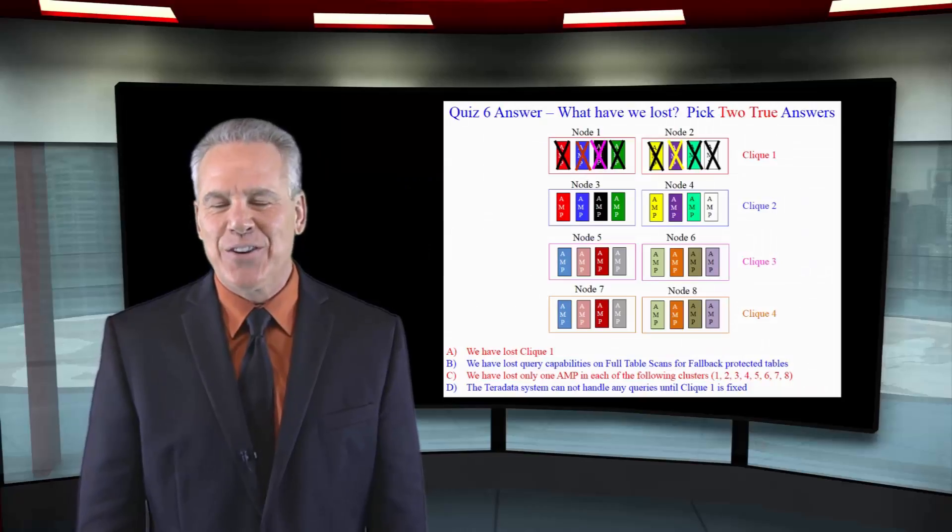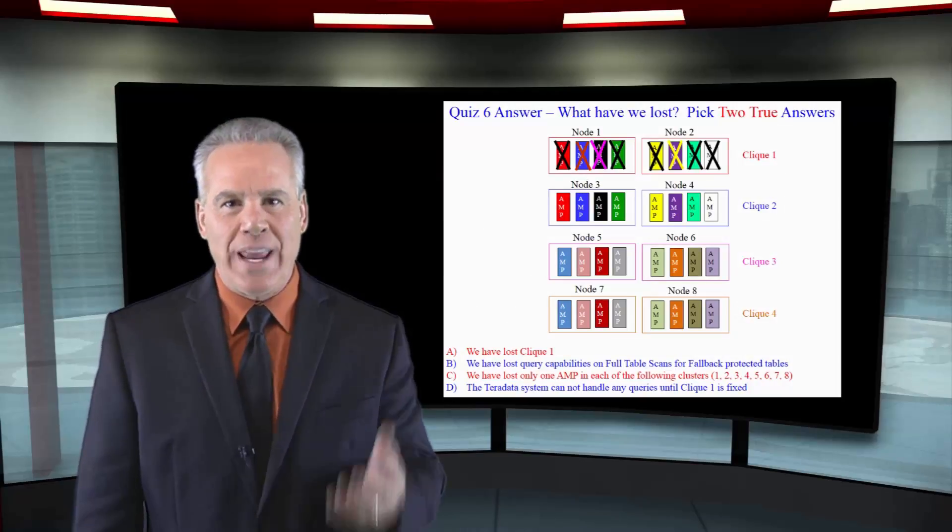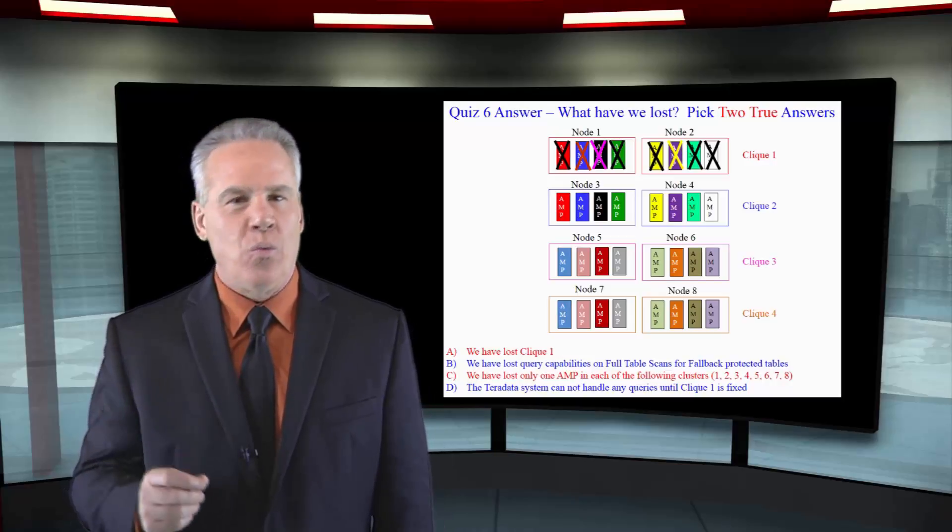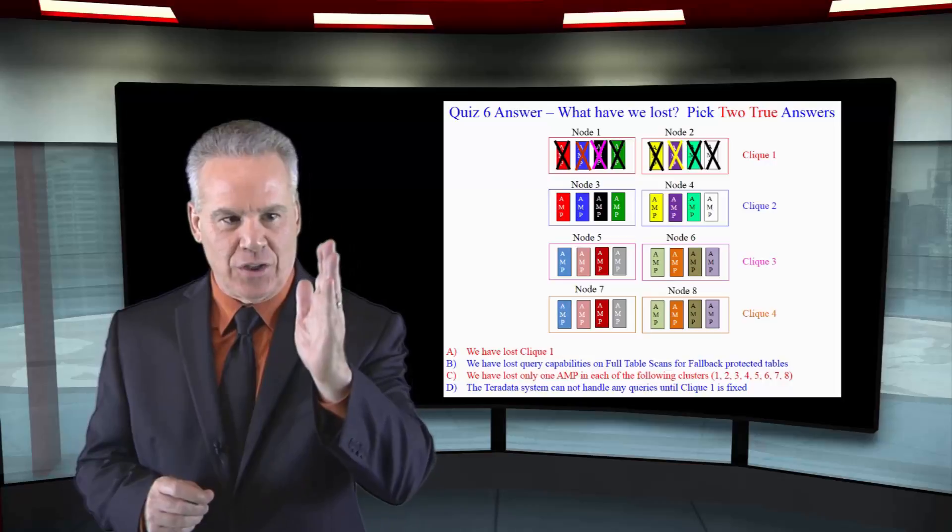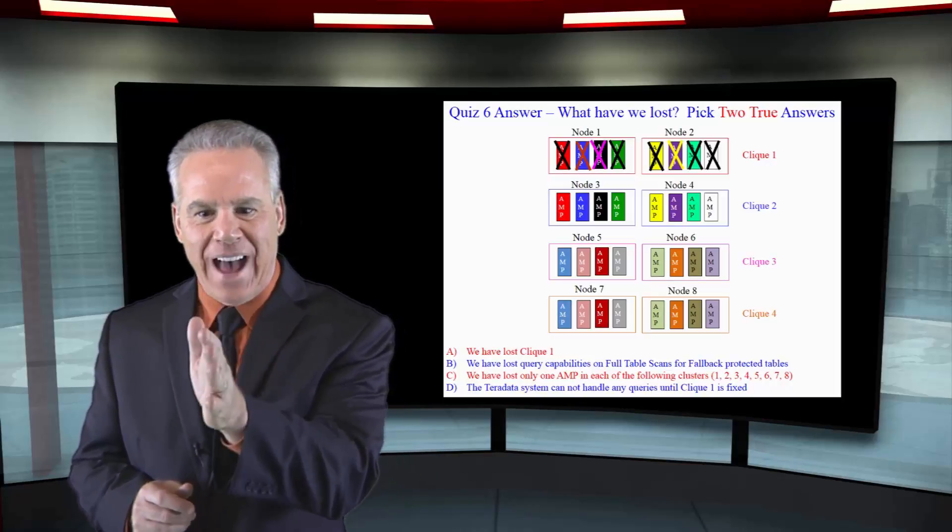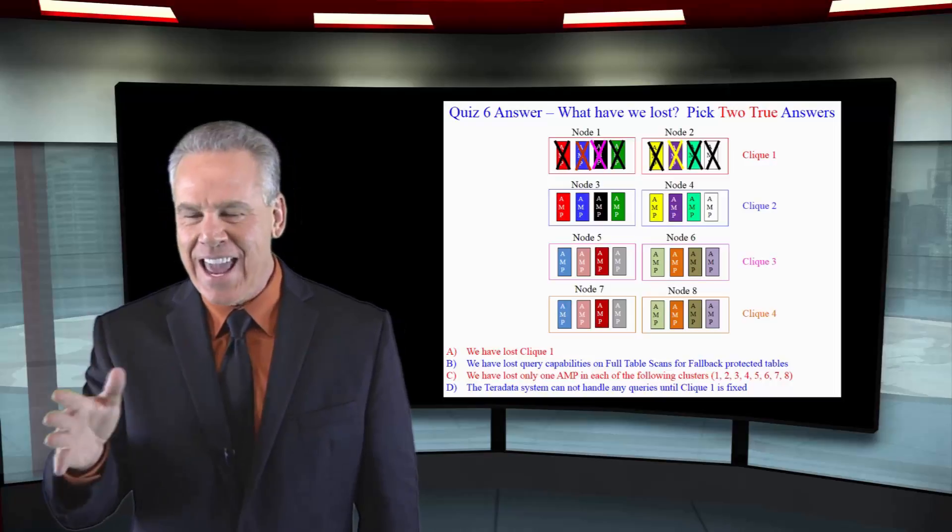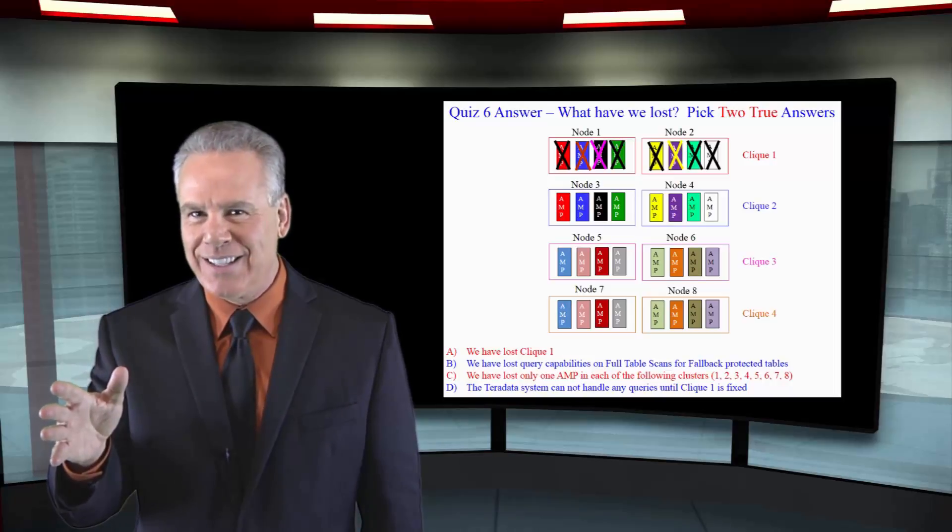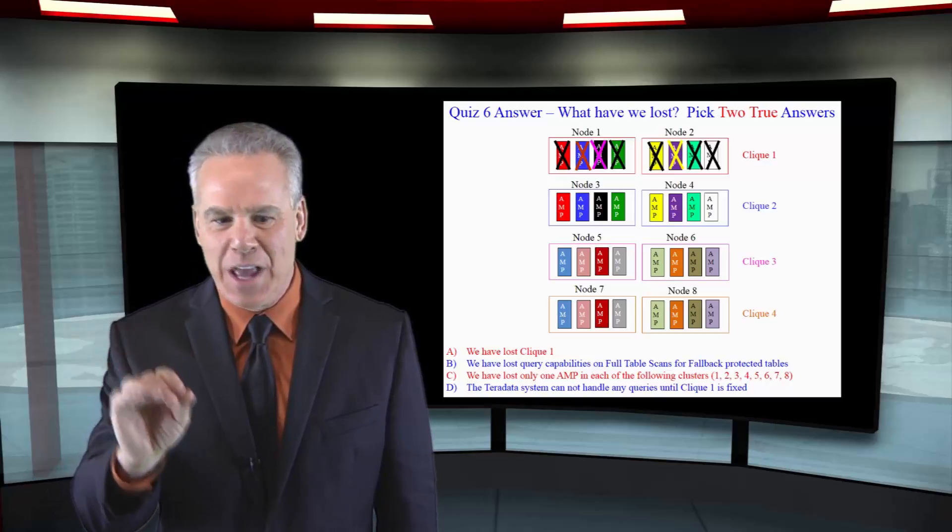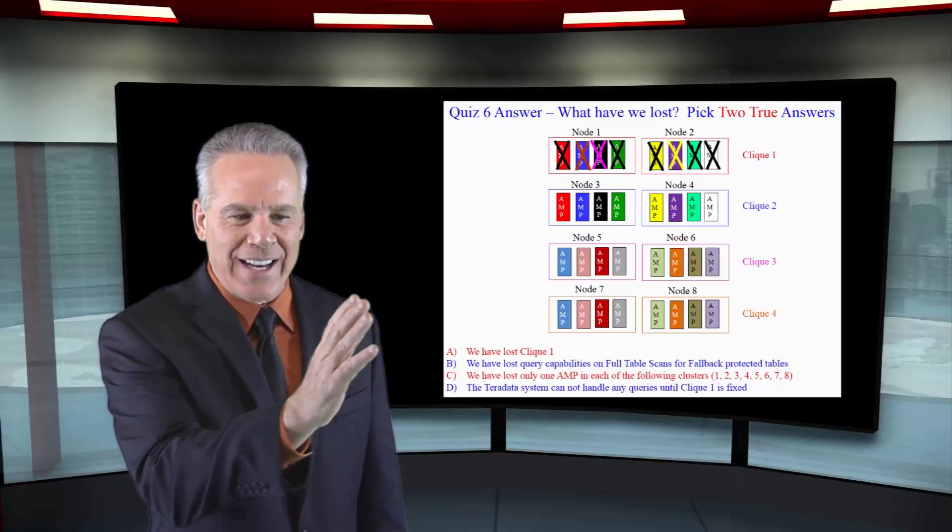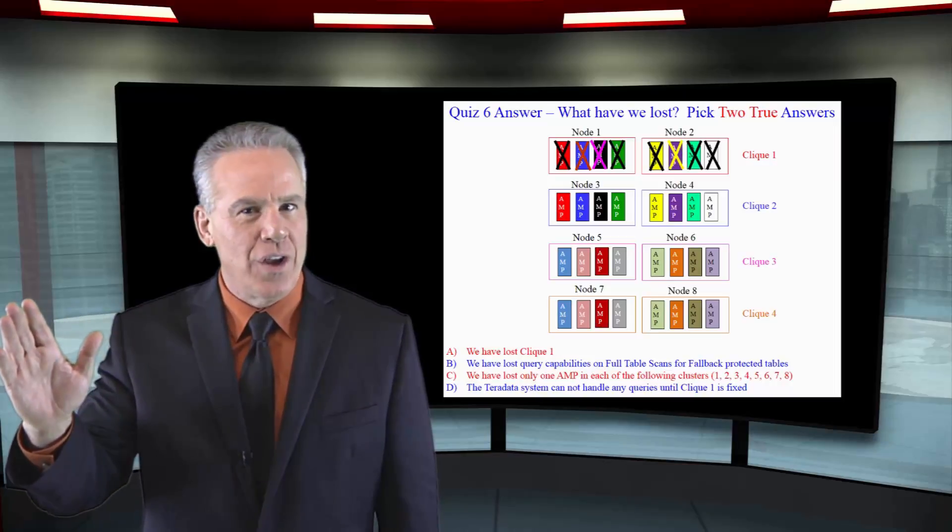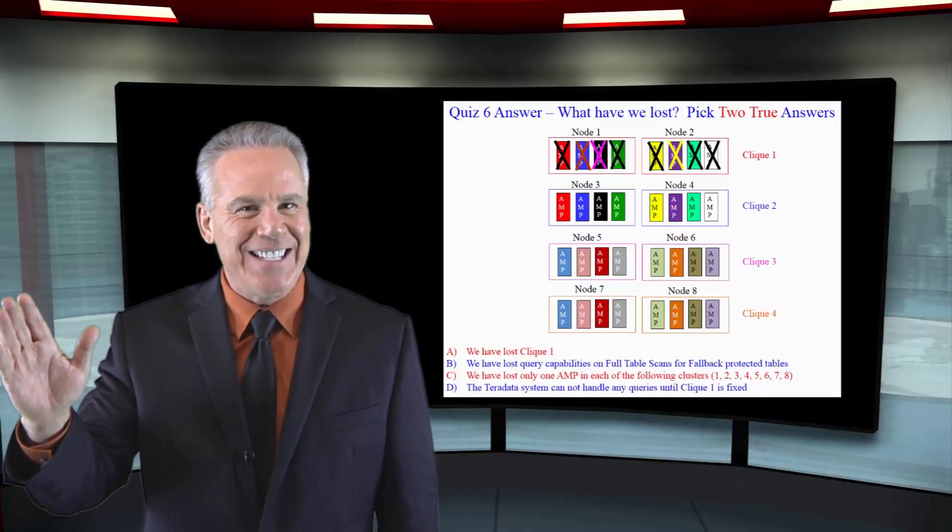A and C are true answers. We have lost clique 1. But in reality, we've only lost one AMP in cluster 1, 2, 3, 4, 5, 6, 7, 8. We can still query this system if the table is fallback protected because even though we've had an entire clique wiped out, we've only lost one AMP in each cluster.